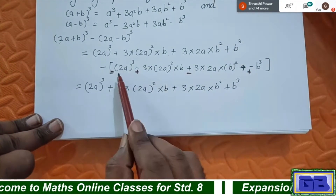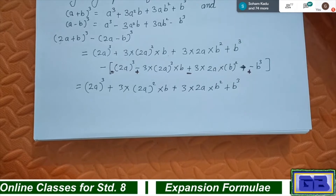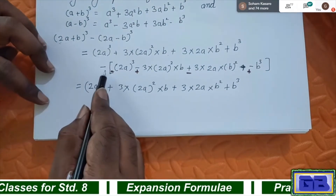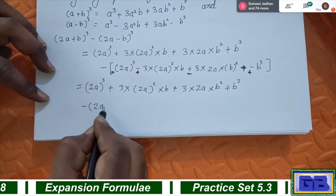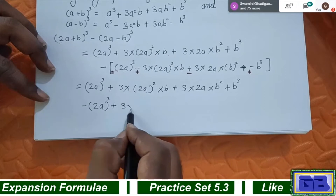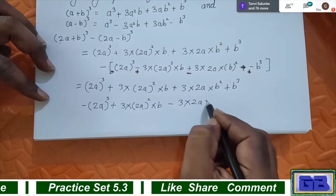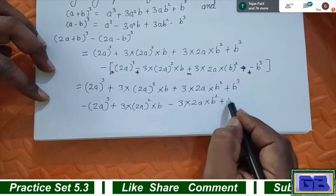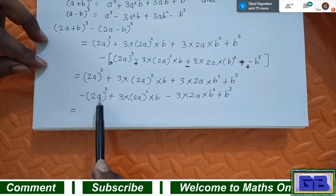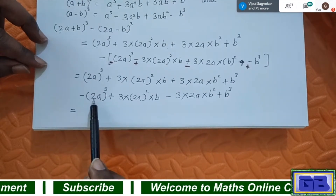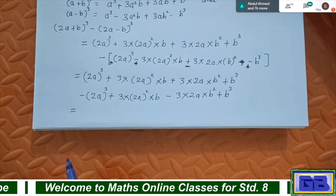We change the signs because when we multiply with minus, minus into plus becomes minus — that rule we apply here. So directly write: minus 2a³, plus 3 × (2a)² × b, minus 3 × 2a × b², and plus b³. Now simplify: if the same like terms appear with one plus and one minus, we cut them.